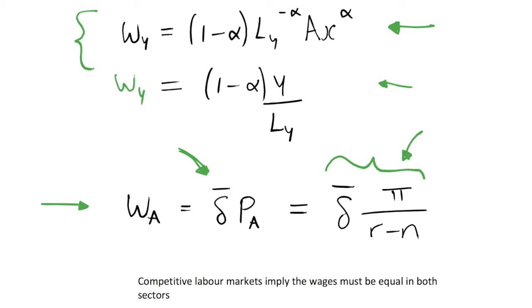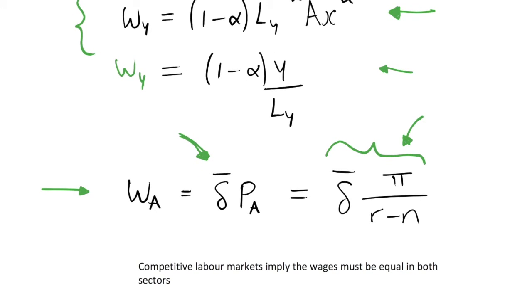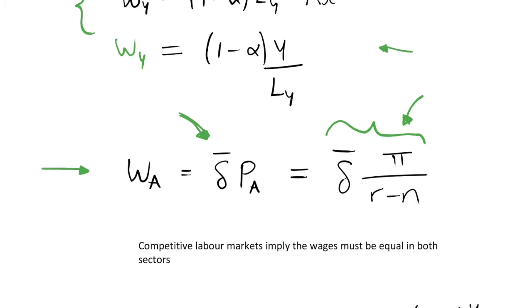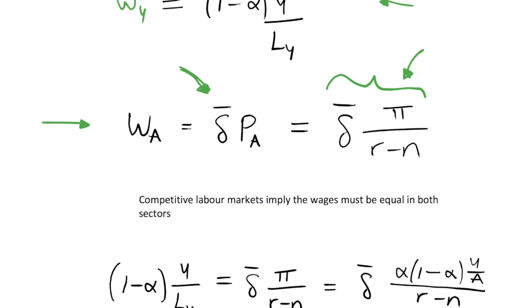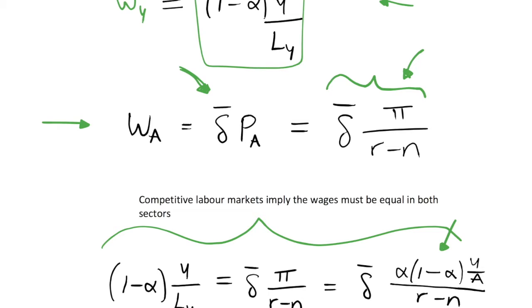Because we have competitive labour markets, wages must be equal in both sectors. If wages in the final goods sector were even slightly higher than in the R&D sector, everyone would choose to work there. So we need wages to be equal for this economy to make sense. We set these two wages equal to each other and substitute in the profit function derived in the intermediate goods sector video.